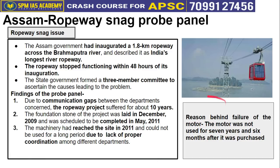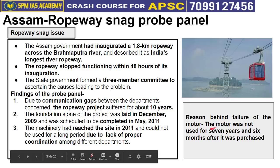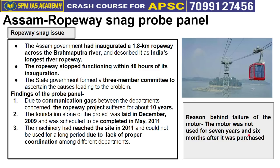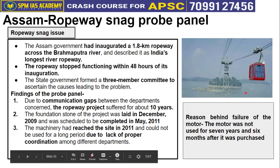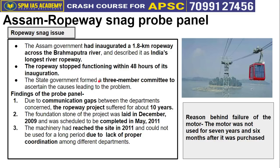Specifically, the ropeway's motor was not used for seven years after purchase — left exposed to sun and rain — because the purchase department bought it but the mechanical and electrical departments took 6-7 years to configure and set it up. This made the motor dysfunctional, so when the ropeway started, it stopped within 24-48 hours. This is a clear example of poor coordination among different departments in the Government of Assam.